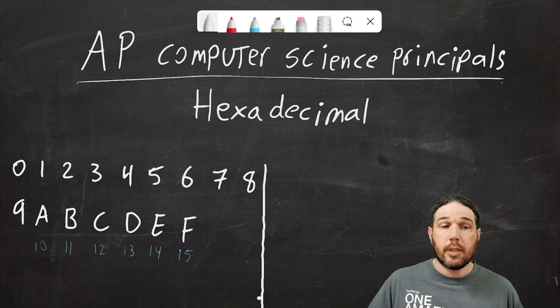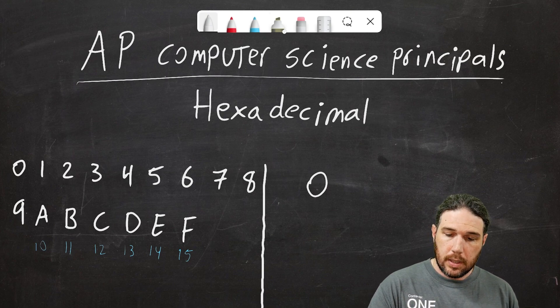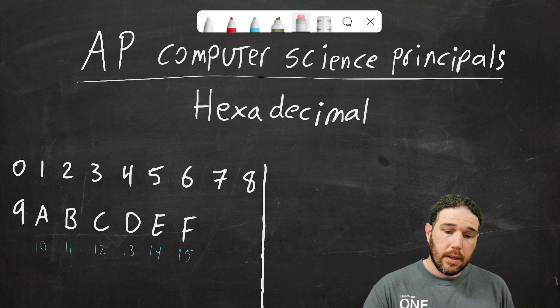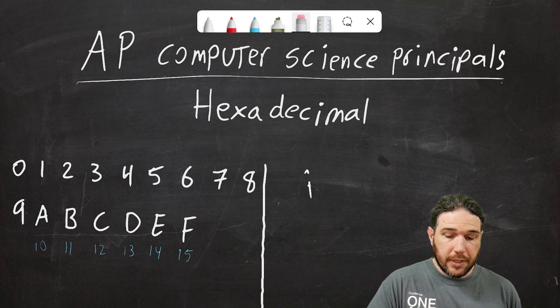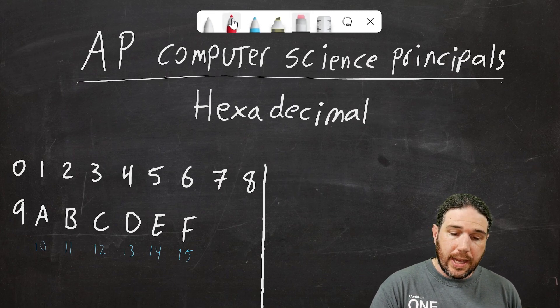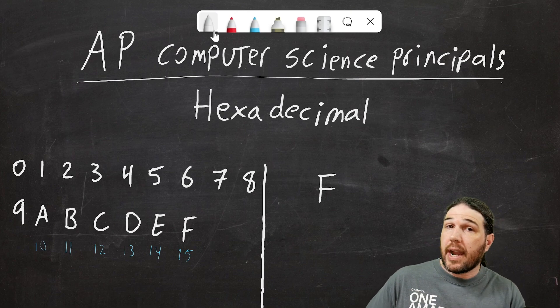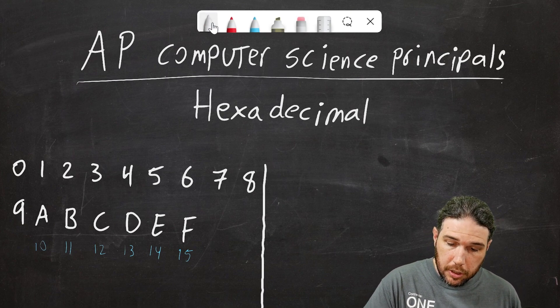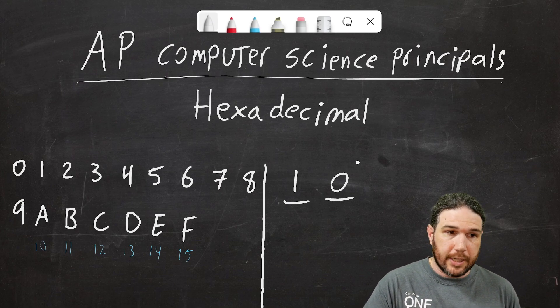So if I'm going to be counting in hex, I would start with 0, and then I would go 1, 2, 3, 4, 5, 6, 7, 8, 9, 10 is A, and then 11, 12, 13, 14, 15, and when I got to F, which is 15, now that I've reached the maximum that I can make with one symbol, I now need two symbols. To make the number 16, it would be 1, 0.